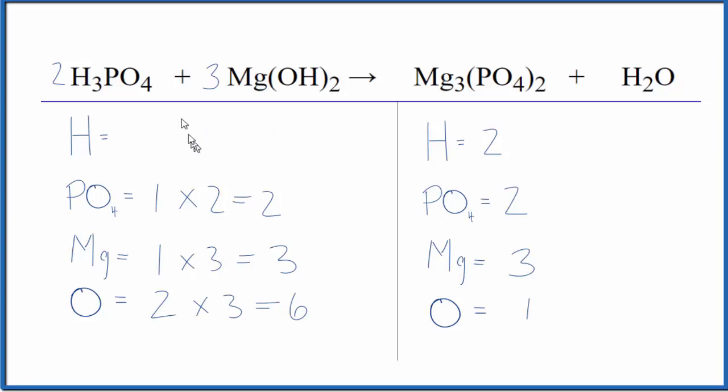I have the two times three, that gives me six, plus the two times the one hydrogen, two times three is six. So now I have twelve hydrogen atoms.